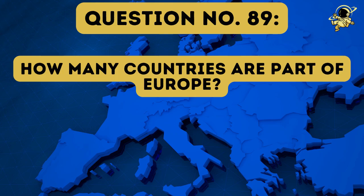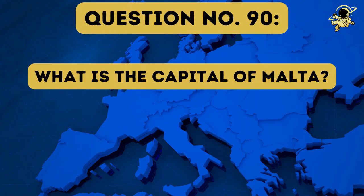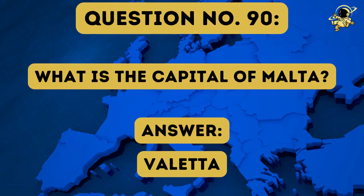Question number eighty-nine: How many countries are part of Europe — and I mean Europe, not the European Union. The answer to question number eighty-nine is forty-seven. What is the capital of Malta? And the answer to question number ninety is Valletta.